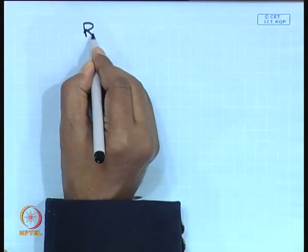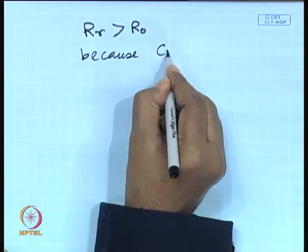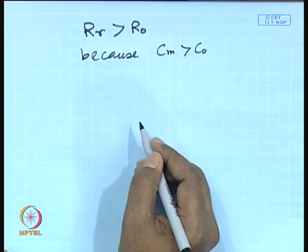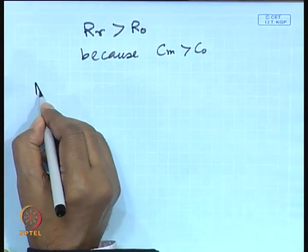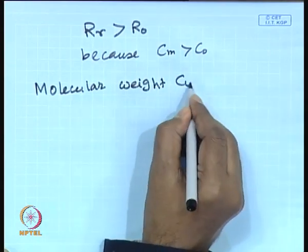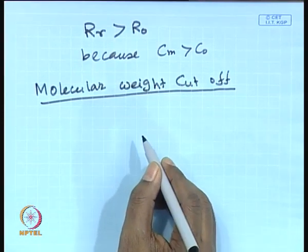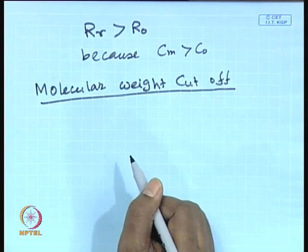Real retention has great implication for modeling and design of systems. RR is always greater than observed retention R-naught because C_M is greater than C-naught. The next definition we come across is molecular weight cut-off, which is basically a gross interpretation of the pore size of the membrane.